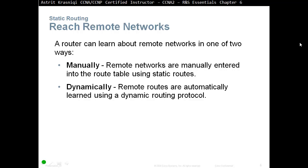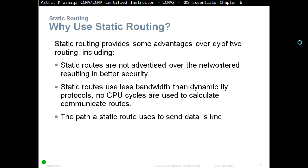How to reach remote networks: a router can learn about remote networks in one of two ways. Remote networks are either manually entered into the routing table using static routes, or dynamically learned automatically using dynamic routing protocols. You don't need to tell the router about directly connected networks — it learns them automatically. For remote networks, you can either type them manually as administrator or let routing protocols learn them automatically.